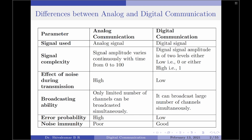The next parameter is the error probability. The error probability in analog communication is considerably high, whereas that in digital communication is quite low. The next parameter is noise immunity. Since analog communication has higher error probability, it has poor noise immunity.